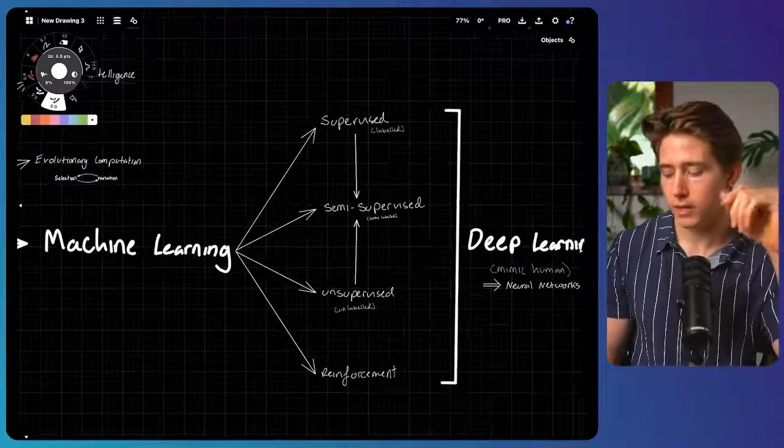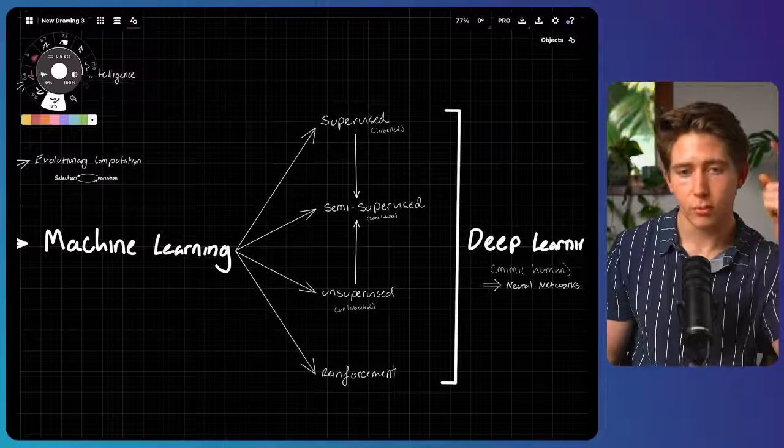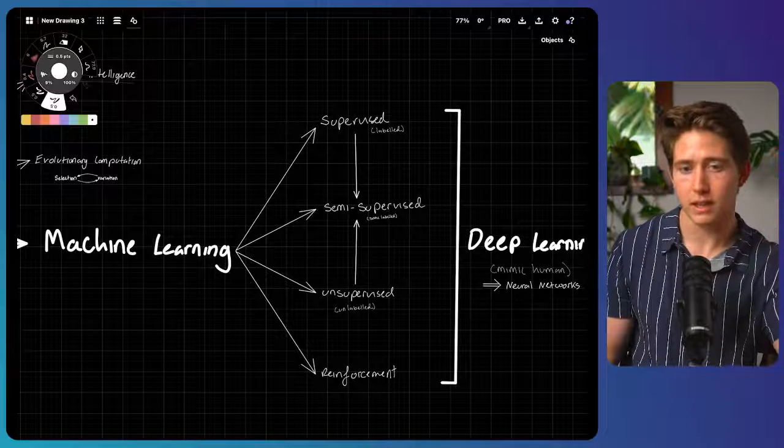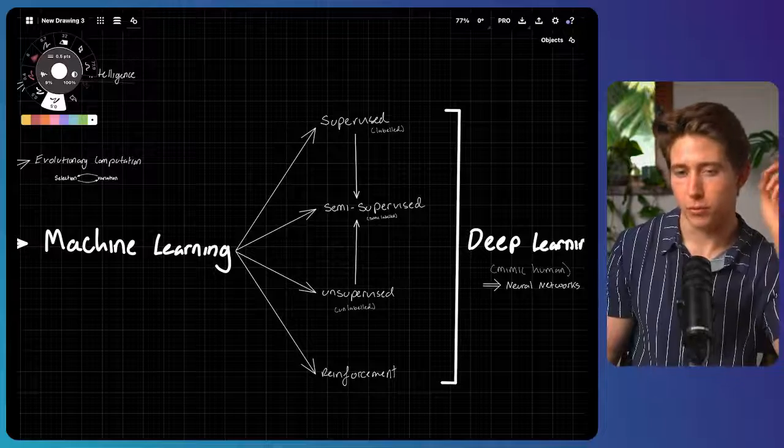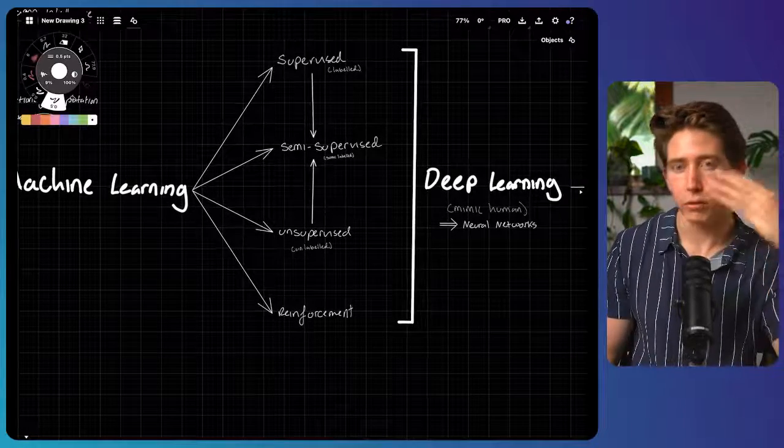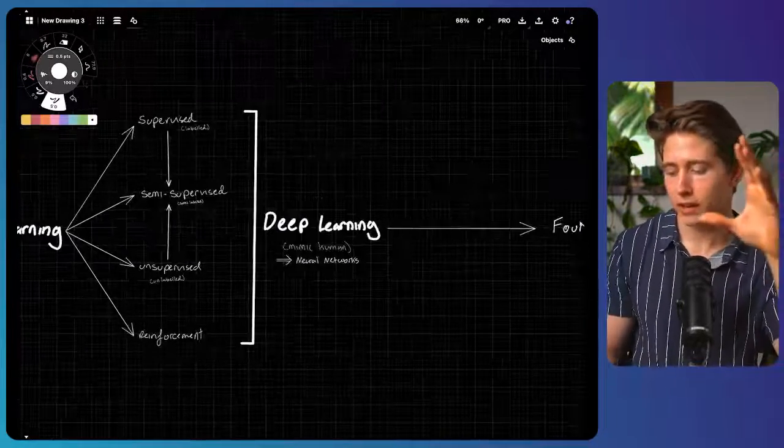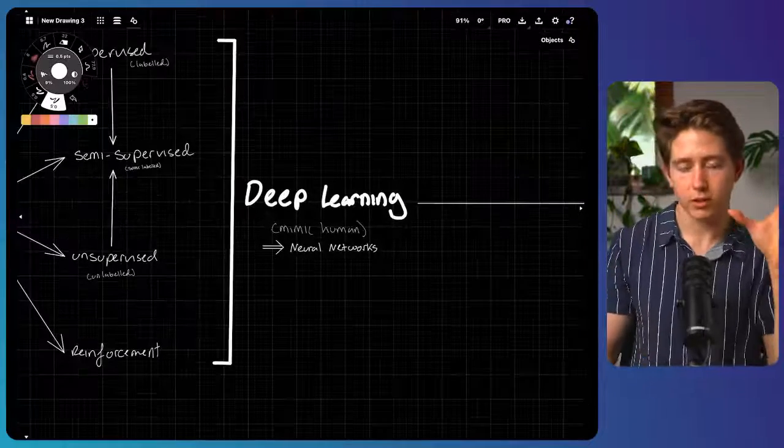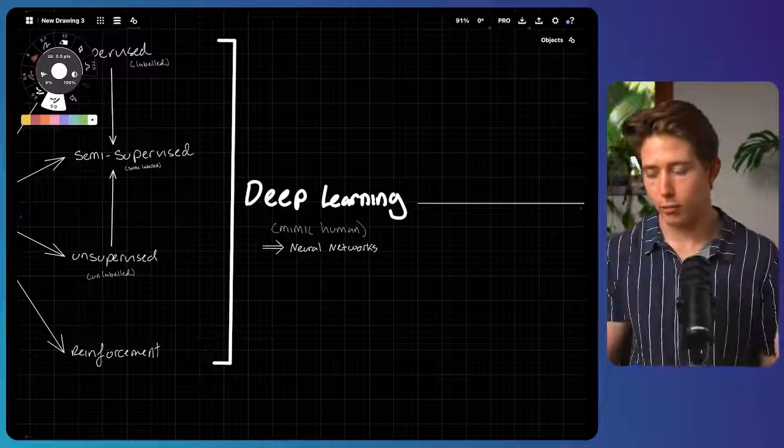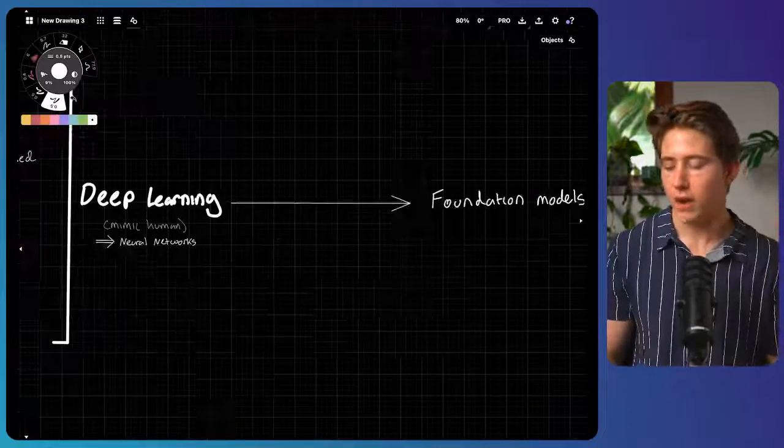And it can learn from data in four different ways, either supervised by a human with labeling data, unsupervised with unlabeled data, or a mix of both with semi-supervised, and finally, reinforcement. And with all of these categories, we can actually use a more advanced method of learning that mimics the human brain with neural networks called deep learning.